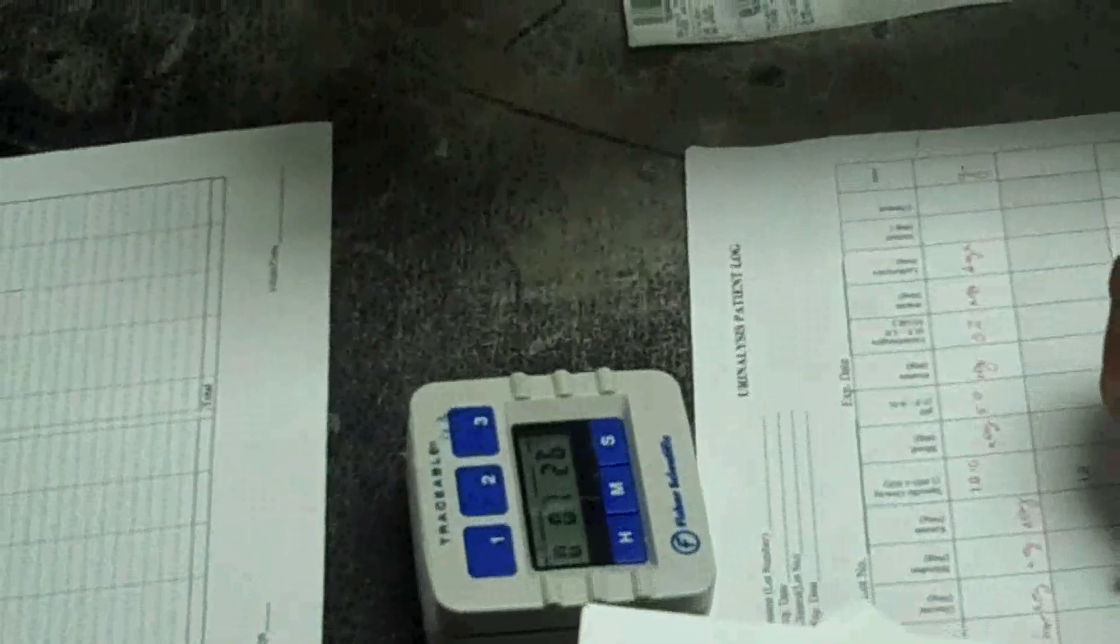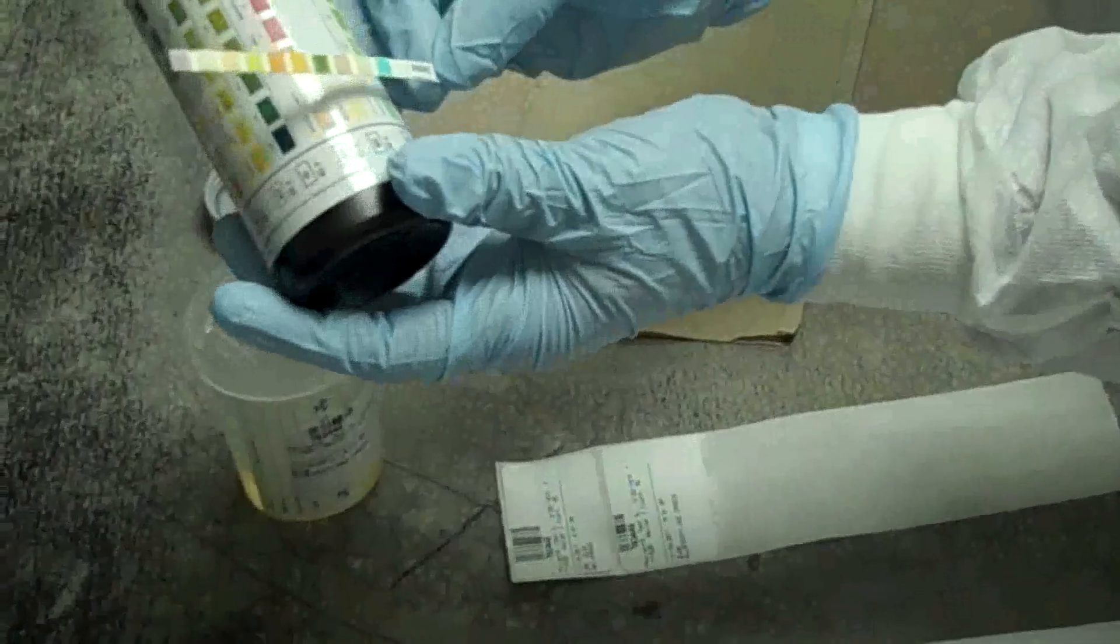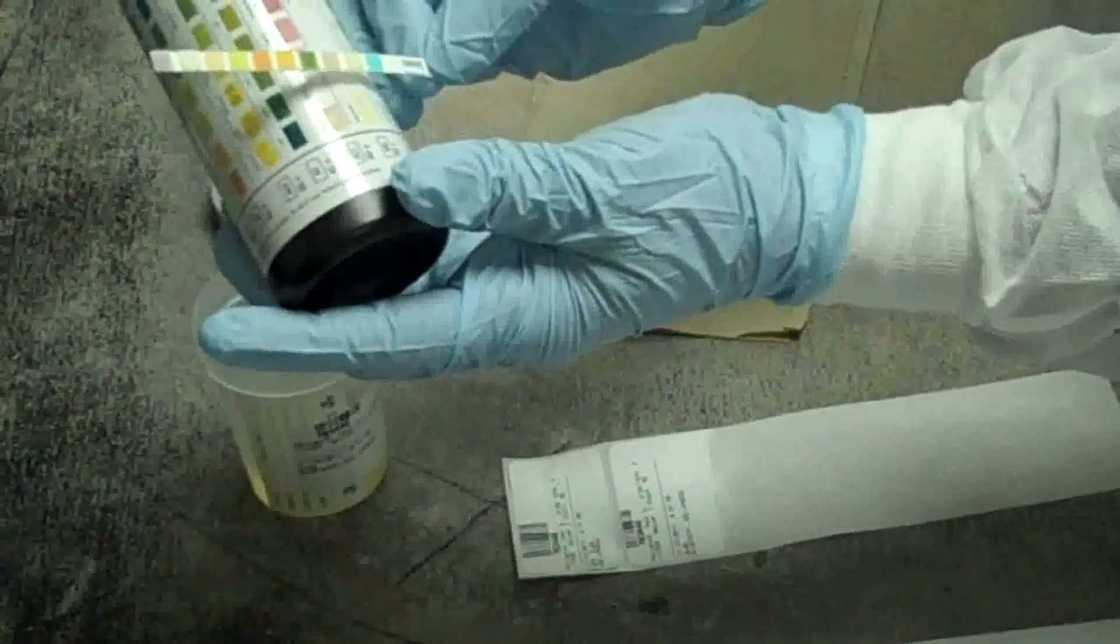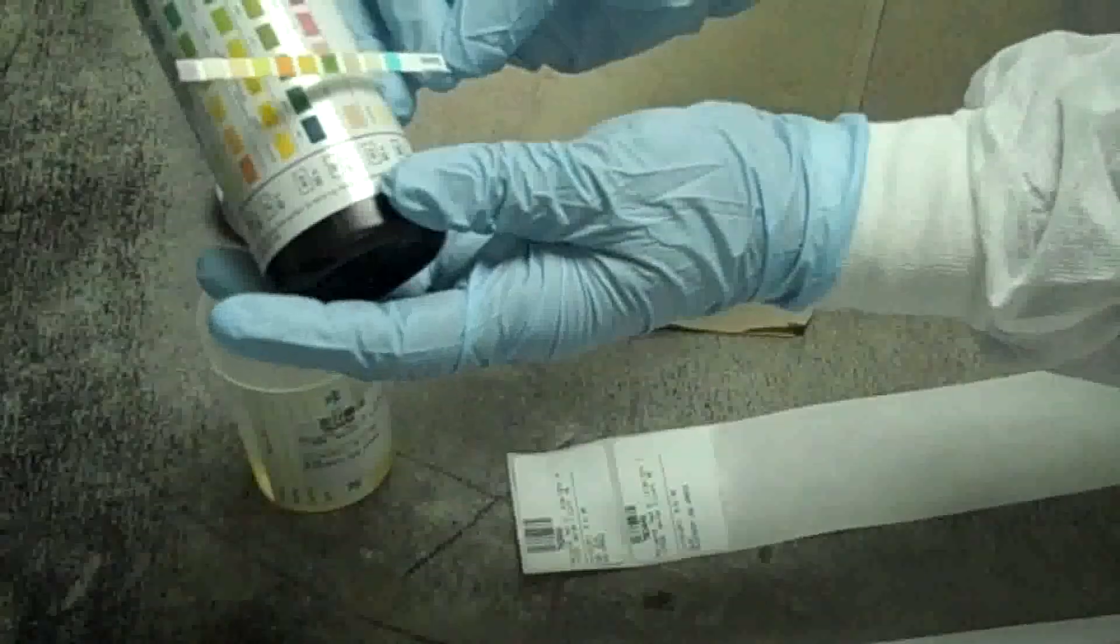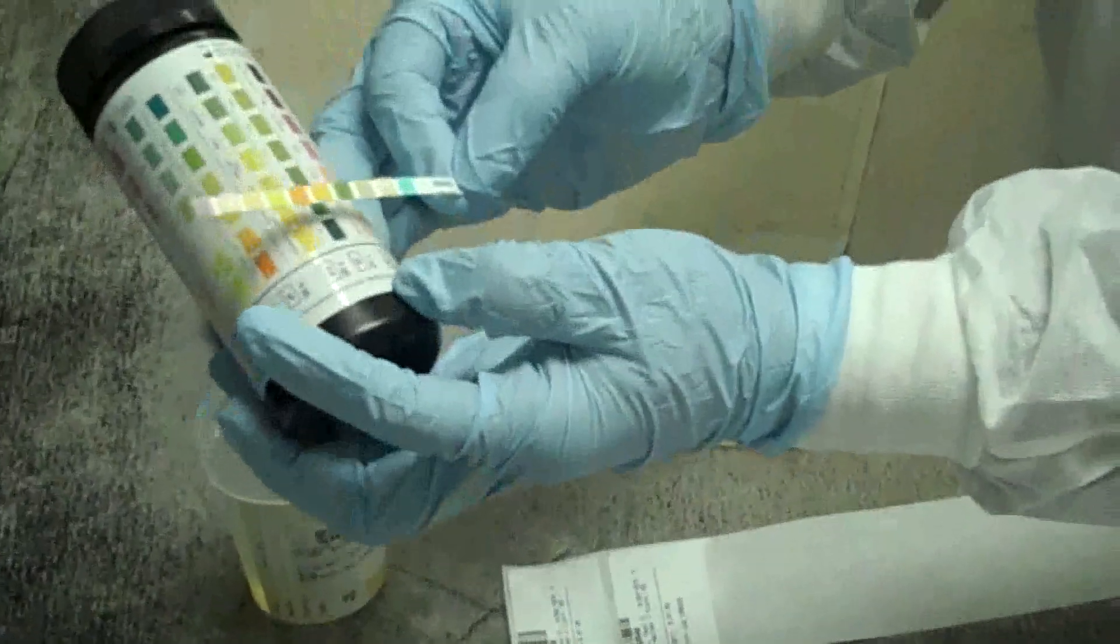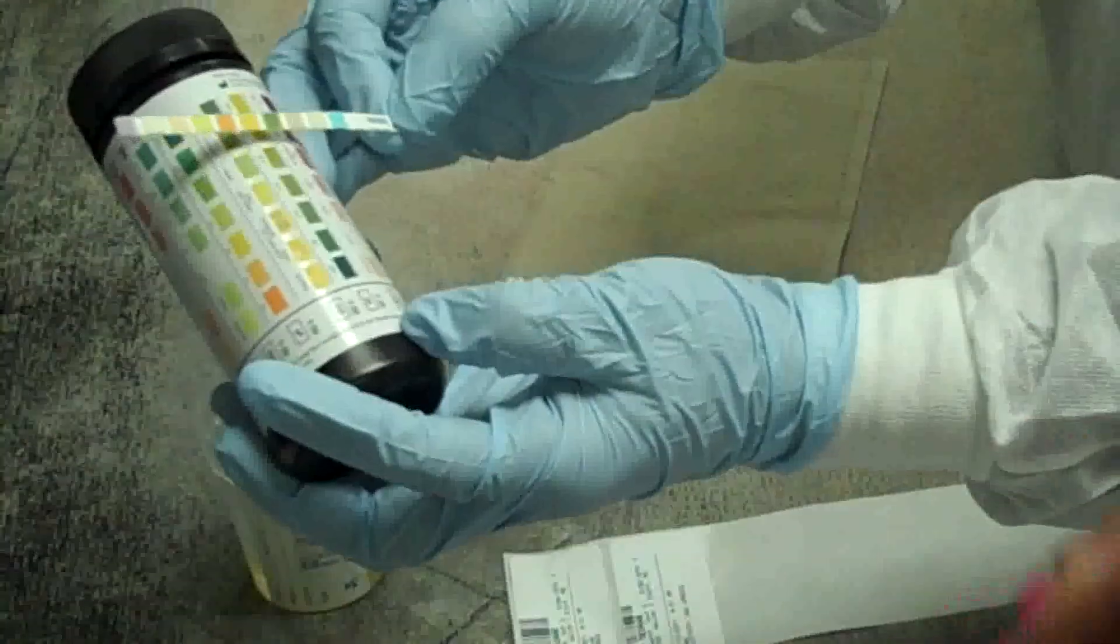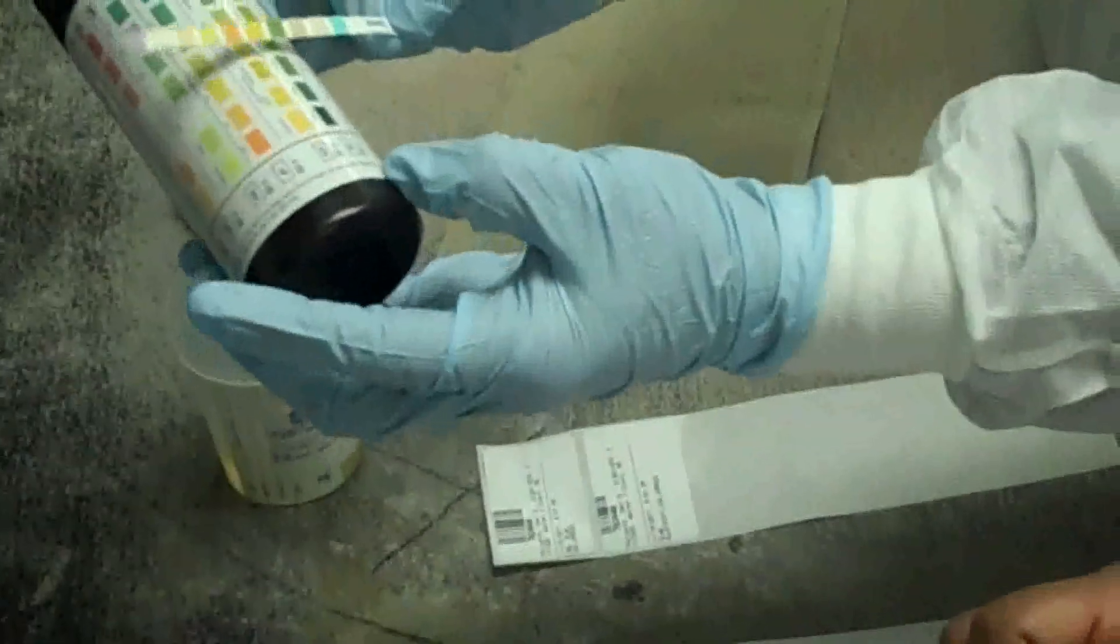At 30 seconds, we will read our glucose. Negative. Bilirubin. Negative. At 40 seconds, we will read our ketone. Negative. 45 specific gravity. 1.015.